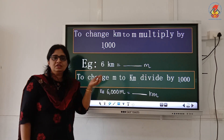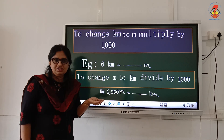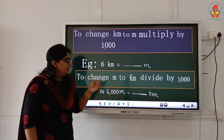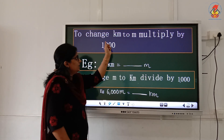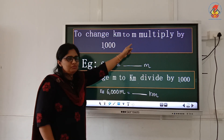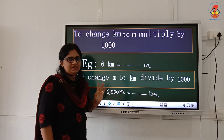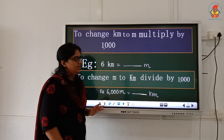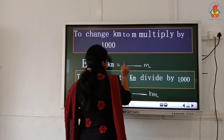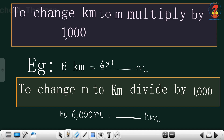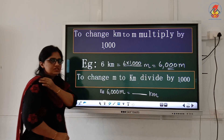For example: 6 kilometer equals dash meter. Here, bigger unit to smaller unit, we need to use multiplication only. Multiply by what? 6 into 1000 meter. I will get 6000 meter. So 6 kilometer equals 6000 meter.